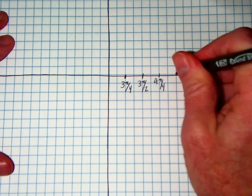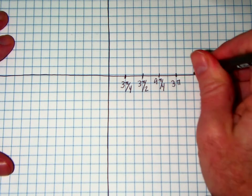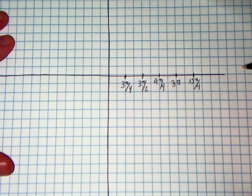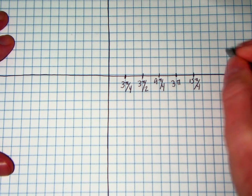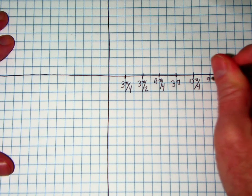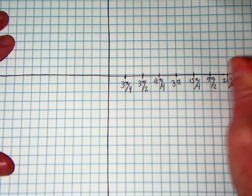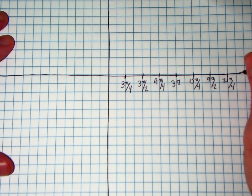12 pi over 4, which would be 3 pi. 15 pi over 4. 18 pi over 4, that would be 9 pi over 2. 21 pi over 4, and 24 pi over 4 would be 6 pi.